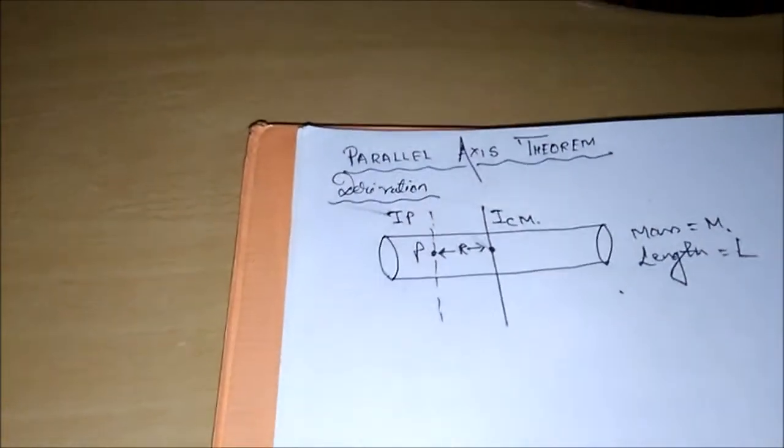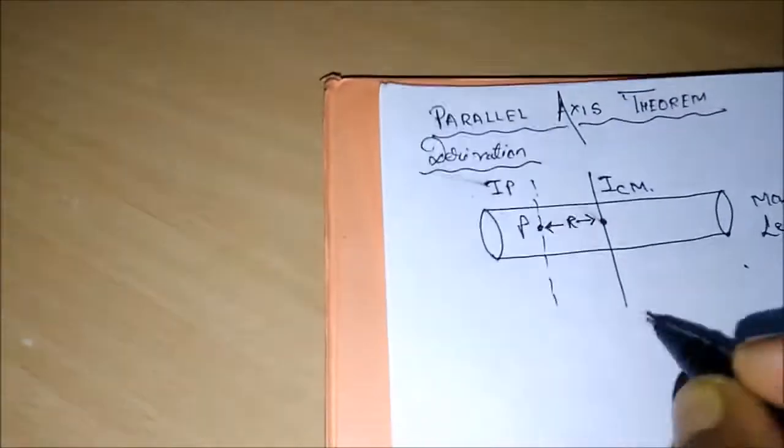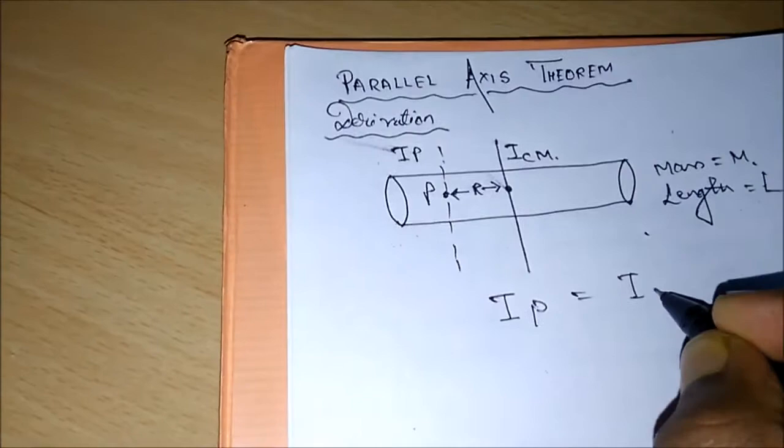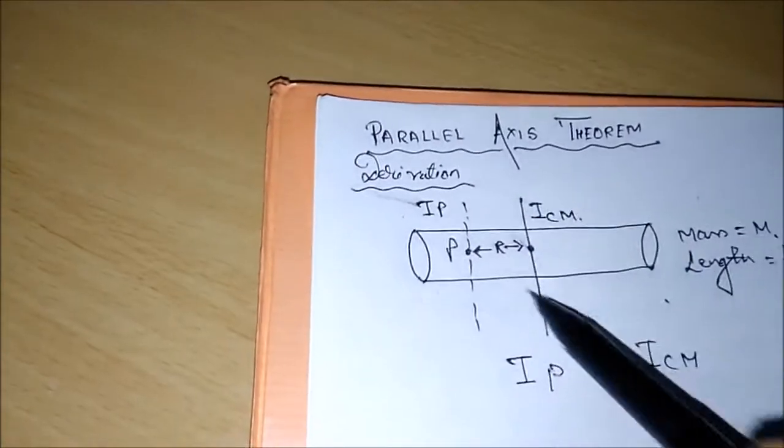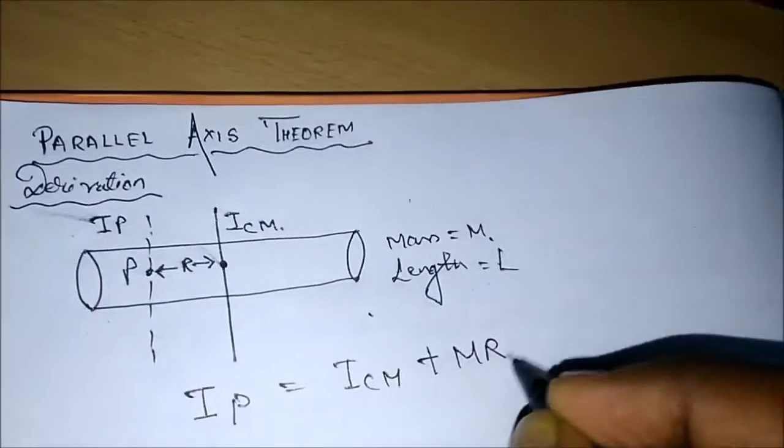Now in order to derive that, what we have to do is simply use this following formula. The formula is: moment of inertia at point P is actually equal to the moment of inertia at the center of mass of the body plus MR².